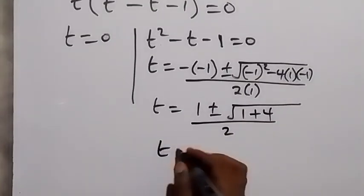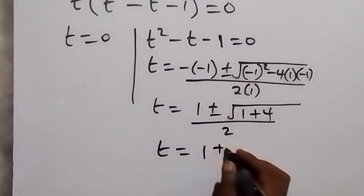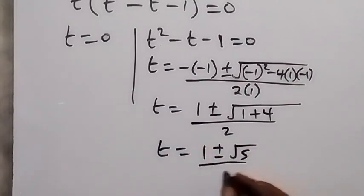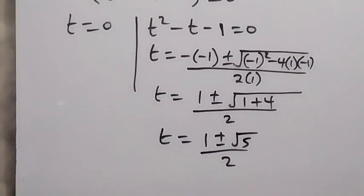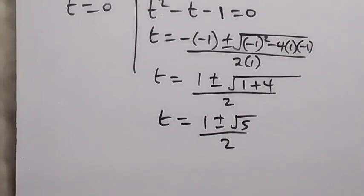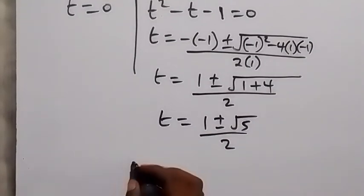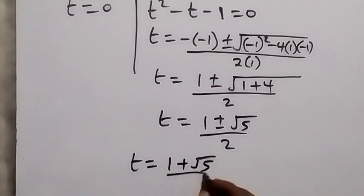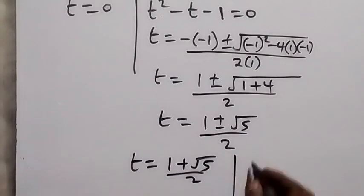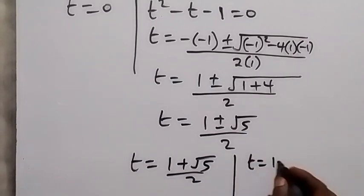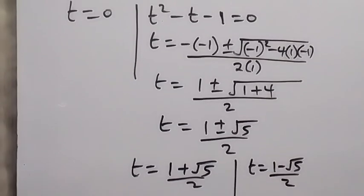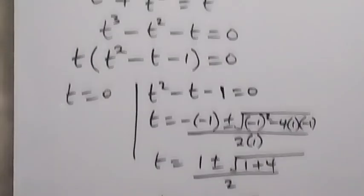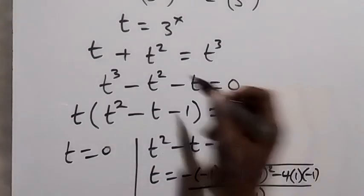So t equals one plus or minus square root of five, over two. We have two values of t here. The first is t equals one plus root five over two, and also t equals one minus root five over two.